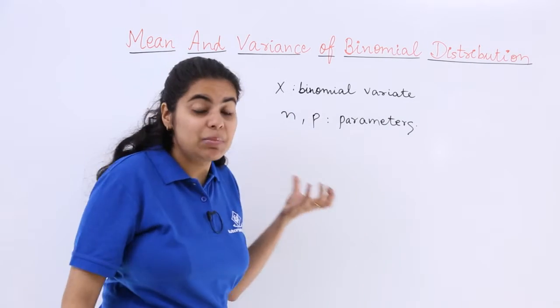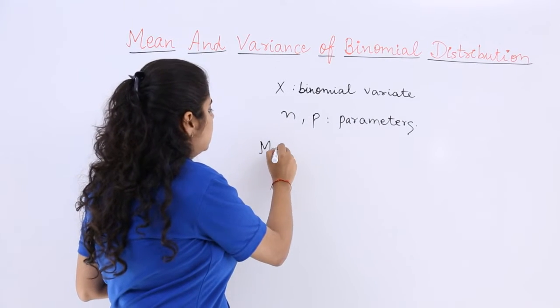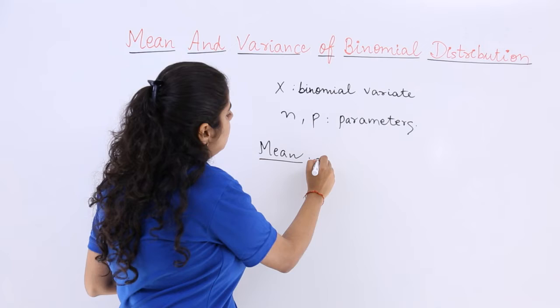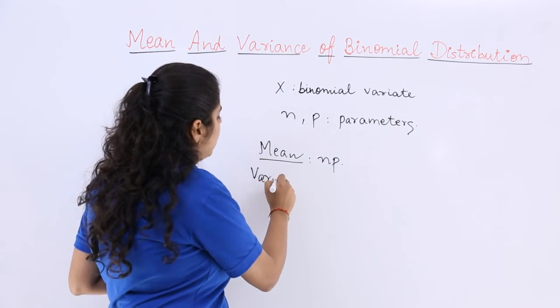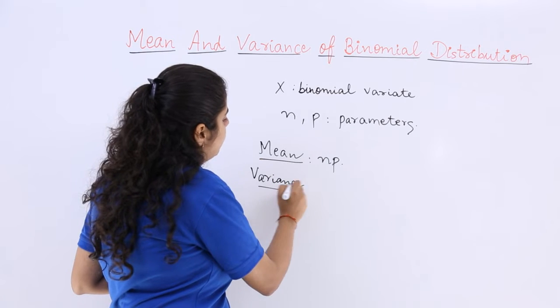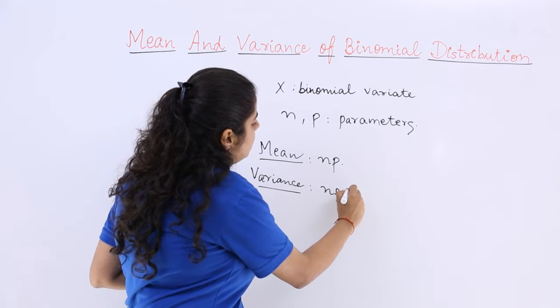The mean would be the product of n and p, and the variance would be the product of n, p, and q.